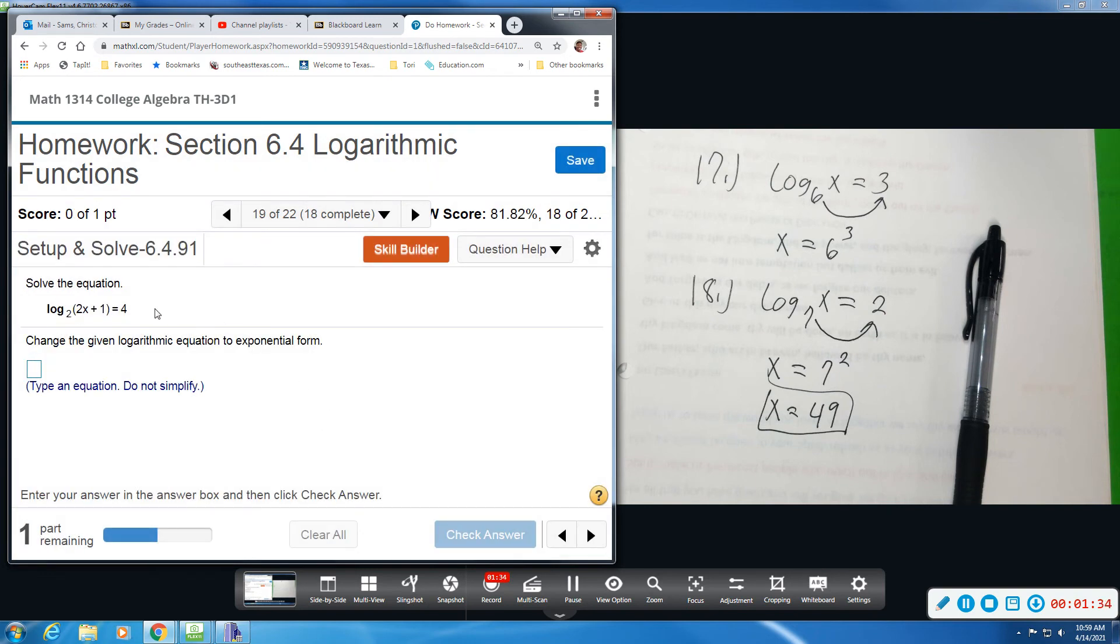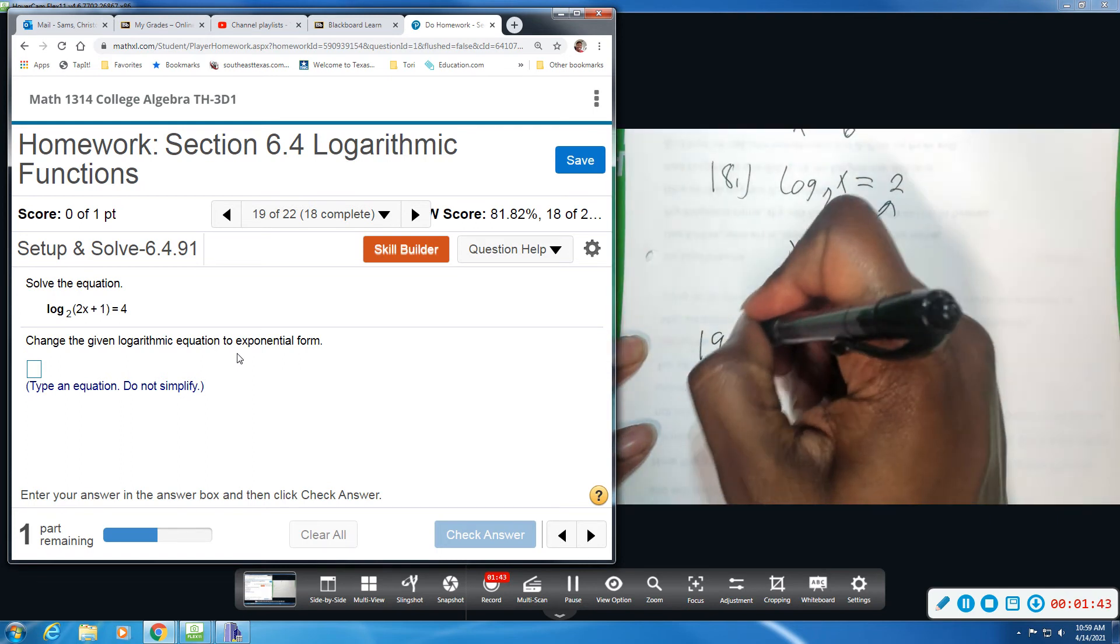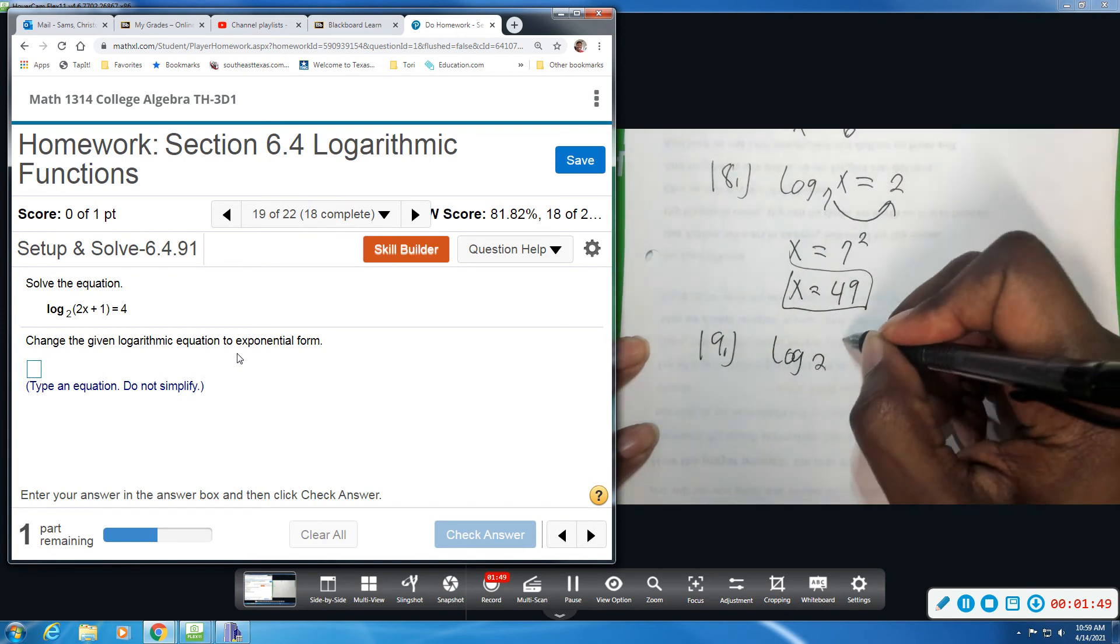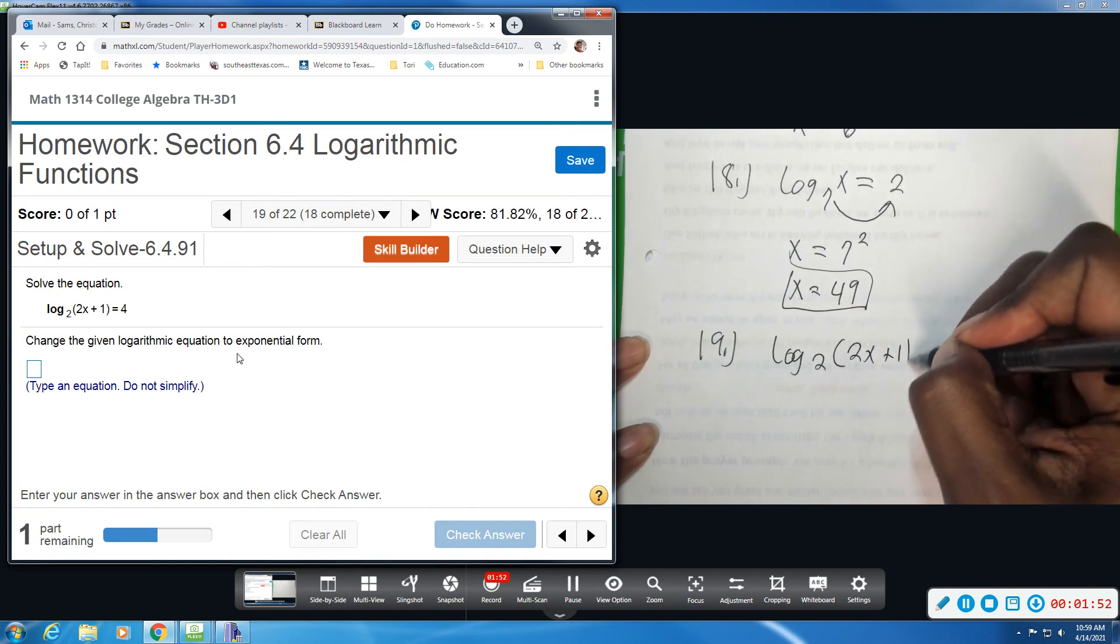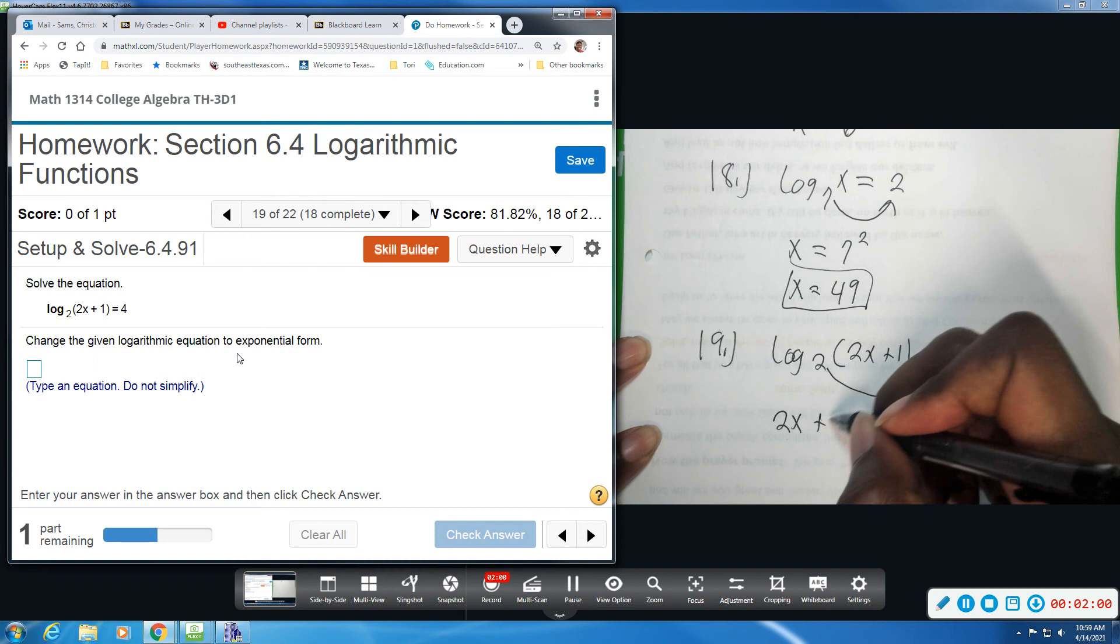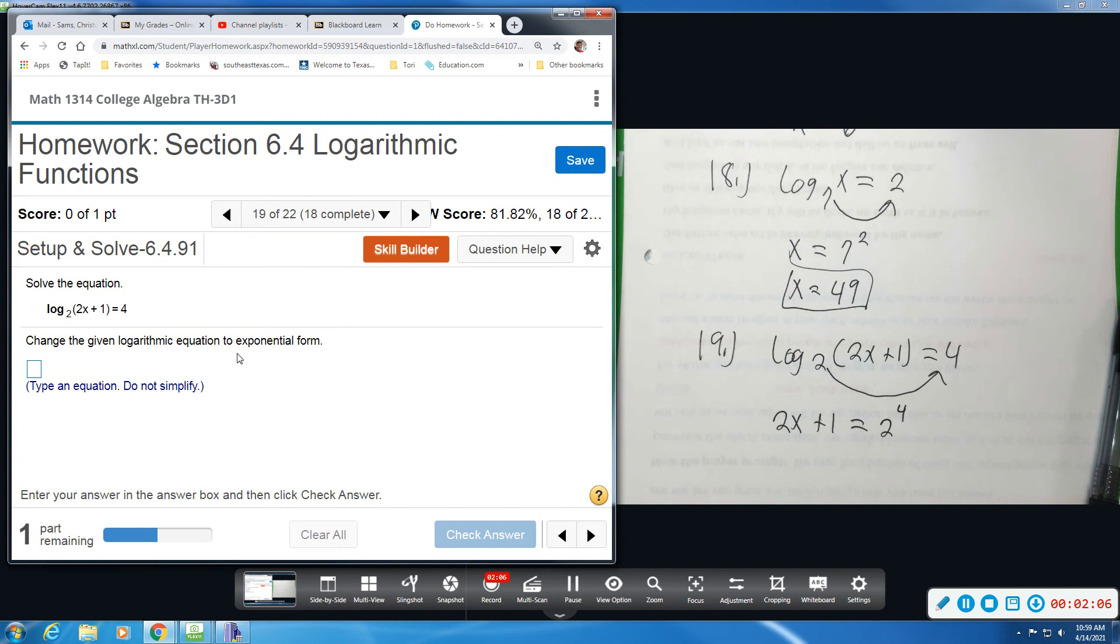Alright, this one is a log equation. Again, we're going to write it in log, or write it without the log, in exponential form. So we have log base 2 of 2x plus 1 equals 4. So we're going to bring this up as your power. So you have 2x plus 1 equals 2 to the fourth. So that would be our exponential form. 2x plus 1 equals 2 raised to the fourth.